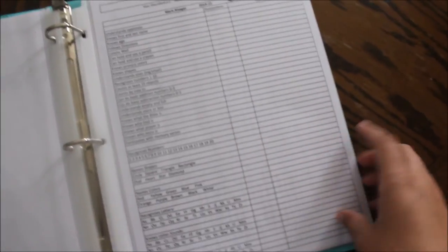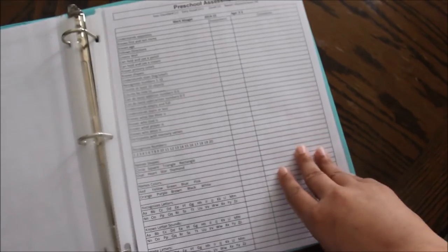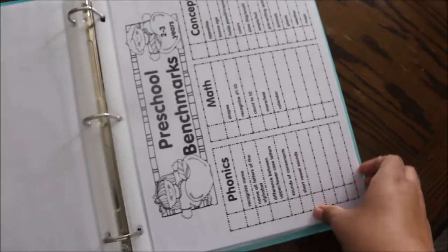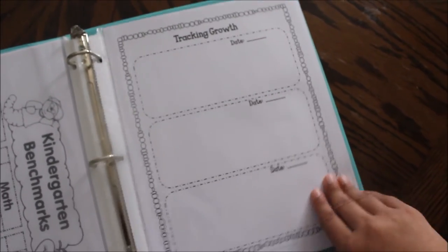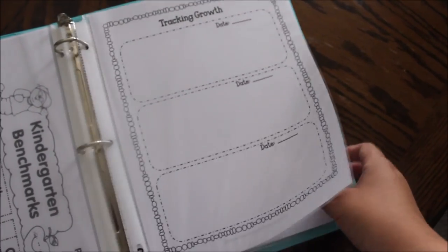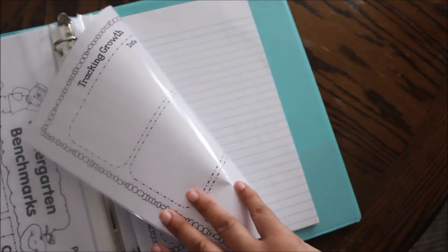And then over here I have assessments. So this is a preschool assessment, what he needs to know. So I kind of have an idea of what I want to teach. I have two of those. I have another preschool benchmark right here, as well as a kindergarten benchmark. So once he hits all his preschool ones, we can work on kindergarten. Tracking his growth monthly. So I printed out a couple of these so I can see how he's improved over the year. So once a month, we have twelve months.